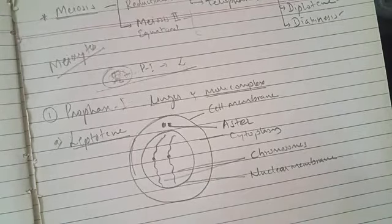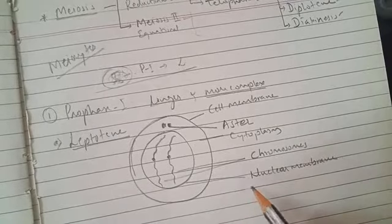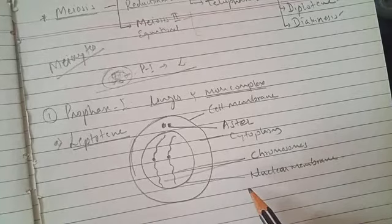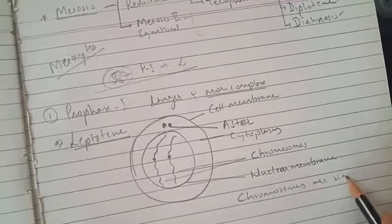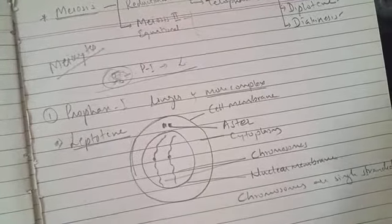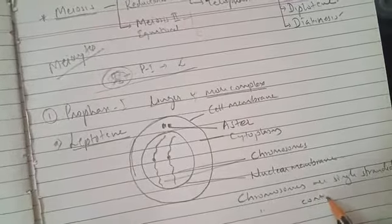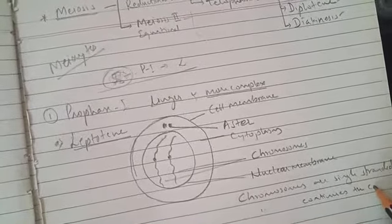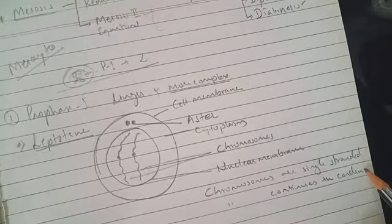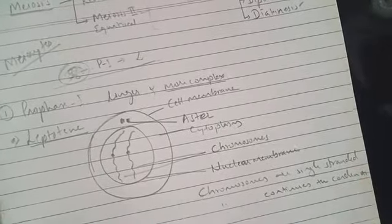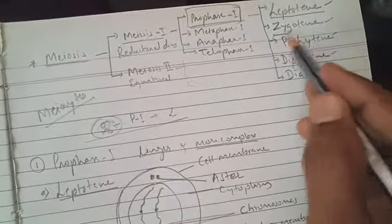To summarize leptotene: the chromosomes are single-stranded and they continue condensation. These are the two key points for leptotene.